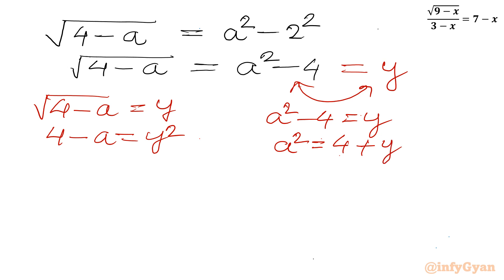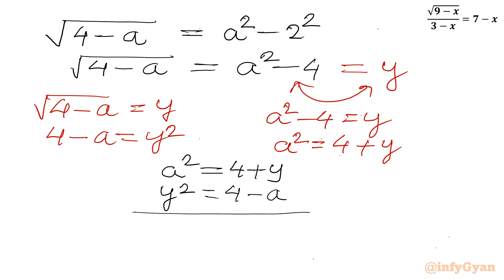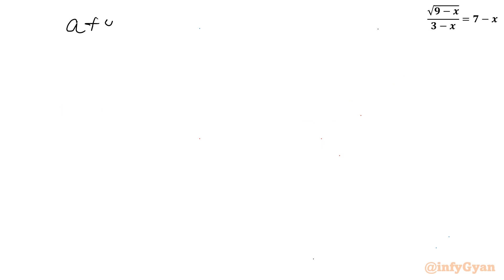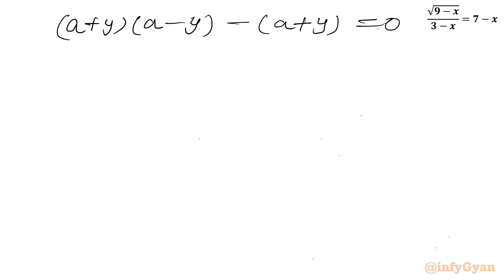Subtracting the first equation from the second, with sign change: left hand side gives a squared minus y squared, and right hand side gives y plus a, or a plus y. Applying the difference of two squares on the LHS: (a plus y)(a minus y) equals a plus y. Taking all terms to the LHS: (a plus y)(a minus y) minus (a plus y) equals 0. Factoring out (a plus y): (a plus y)(a minus y minus 1) equals 0.